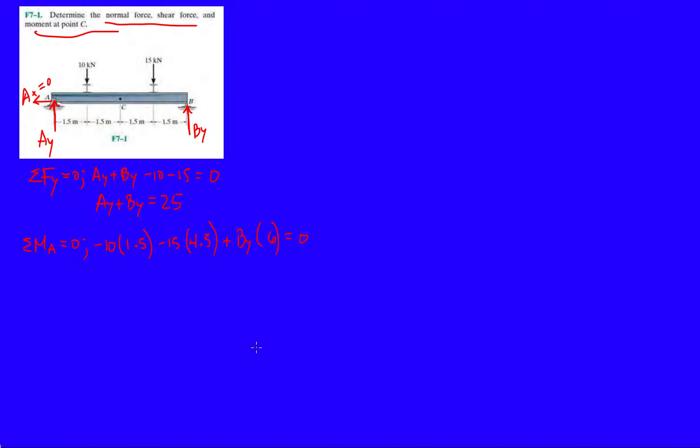So then here, I can find what BY is. My reaction force at B, 10 times 1.5 plus 15 times 4.5 divided by 6. It's a nice number. 13.75 kilonewtons. And then now we know that plugging it back into this equation, we know that AY is 25 minus that, 11.25. Ba-da-beam, ba-da-boom. So we have BY and AY.